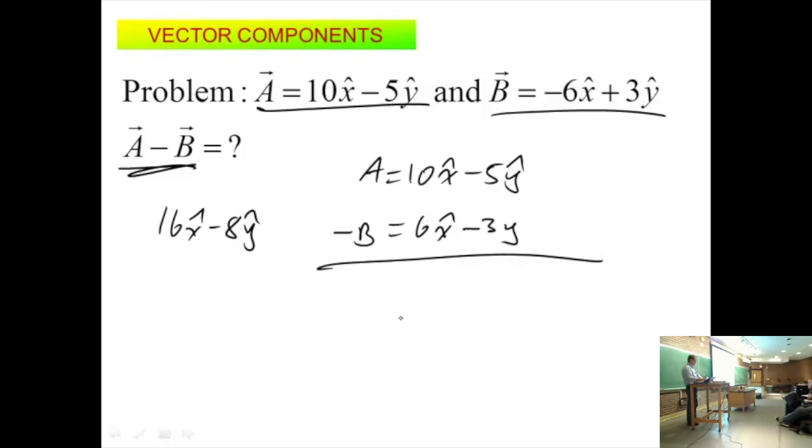Do the math. 10 plus, why am I going plus? Because when we're adding vectors, I'm adding vectors. To subtract vectors, what do we do? A plus the negative of B, right? Remember that from last class? So 16x hat minus 8y.